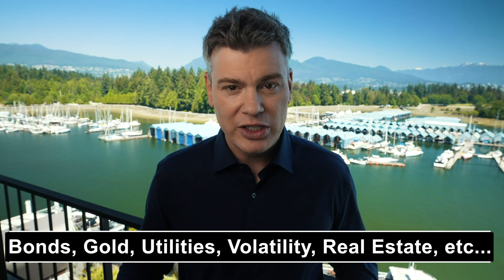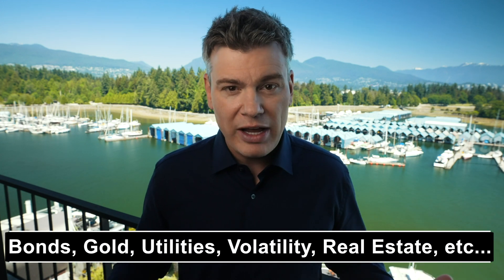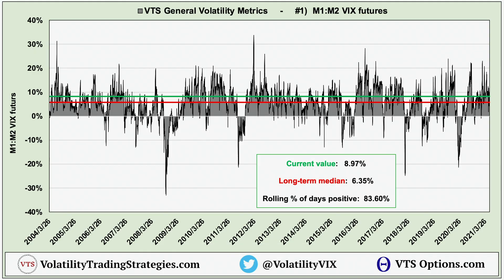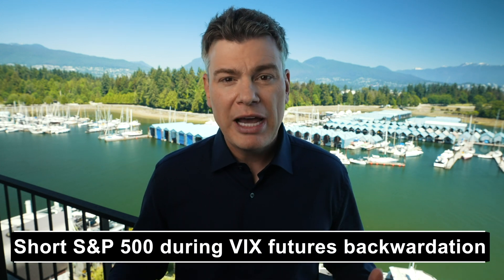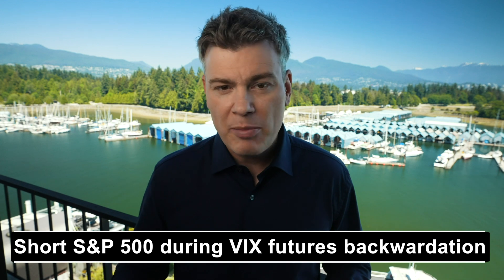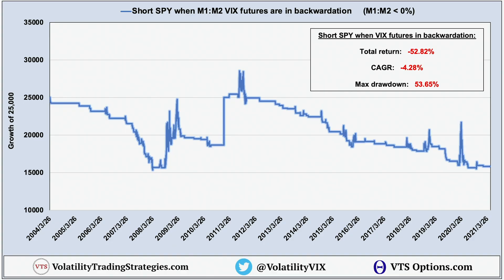Today we're going to continue the conversation by adding several other asset classes and testing those. As all of us in the volatility space know, the VIX futures go into backwardation during periods of elevated market risk and uncertainty. They only go into backwardation on roughly 16% of trading days, so it's not that often, but every single time the markets crash it will show up in the VIX futures. Because of this, a lot of people think all they have to do is wait for those VIX futures to go into backwardation, then short the stock market and make a bunch of money. But in that last video I showed that while that sounds good in theory, in actual practice it wouldn't work at all.